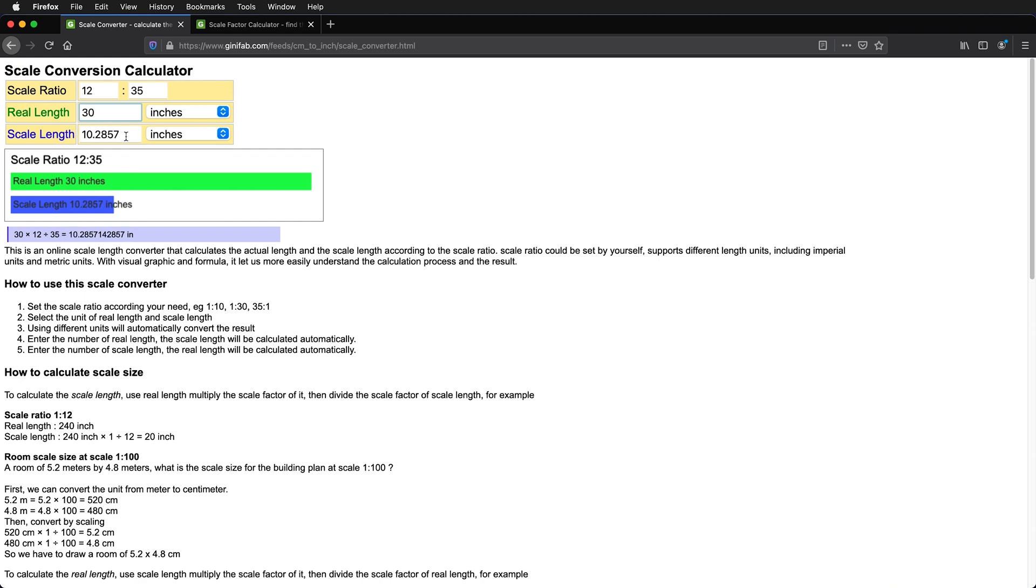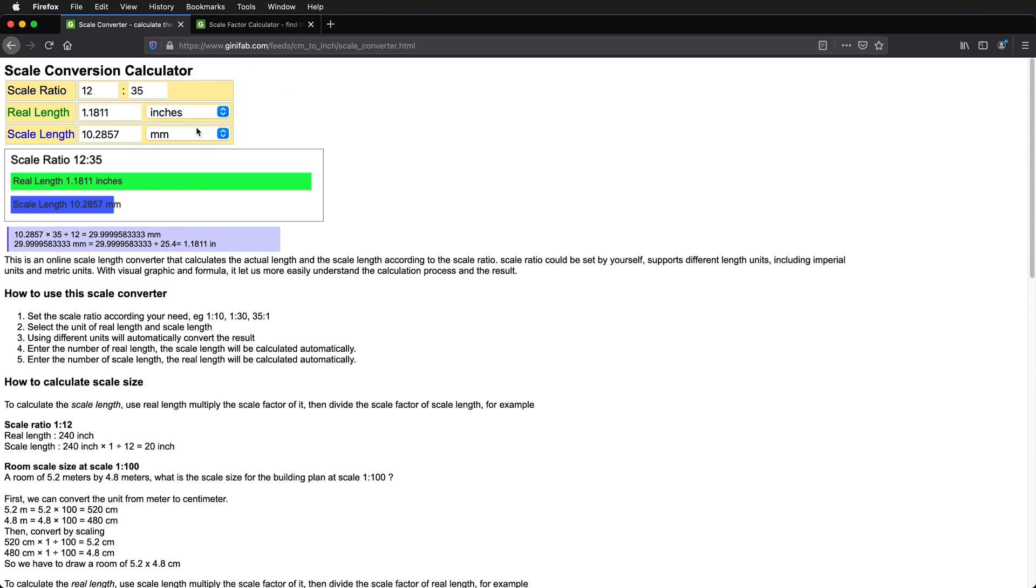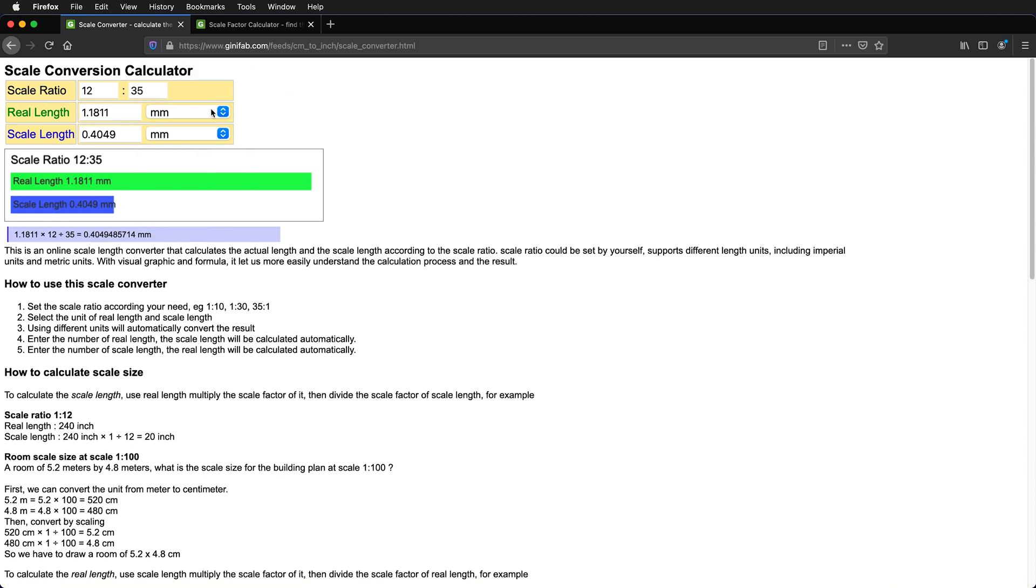And we type in our 30 inches. At inches, we're going to get this terrible decimal, 10.2857. That's pretty meaningless and not helpful. So what we want to do is keep the second thing in millimeters at a minimum. It's best to just go ahead and work in millimeters to millimeters all the time.